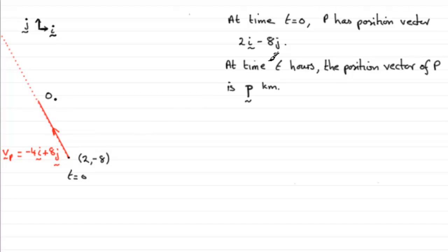And at time t hours, the position vector of p is given by p, this vector p, kilometres. And we've got to write down p in terms of time t.